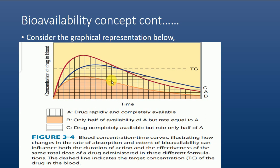For Drug B, this is the graphical presentation — you may find that only half of the availability of Drug A is achieved. Comparing Drug A and Drug B on the graph, the extent from the graph of Drug B is half that of Drug A.